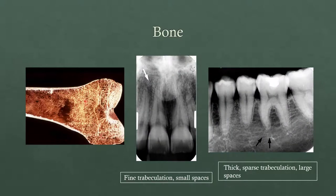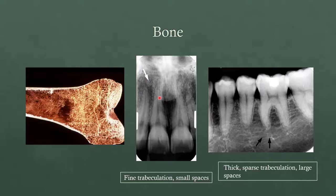Here's a sliced image of bone where we see dense cortical bone on the outside — that compact bone is very dense and will appear more radiopaque in our radiographs. Internally we have the marrow spaces in the trabeculation, sometimes in a honeycomb pattern or different variations. It's more common to see fine trabeculation with small marrow spaces, while in the mandible, especially in the body of the mandible, you'll often see more thick, sparse trabeculations.